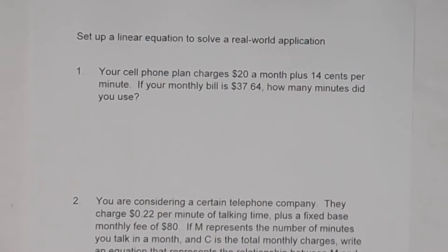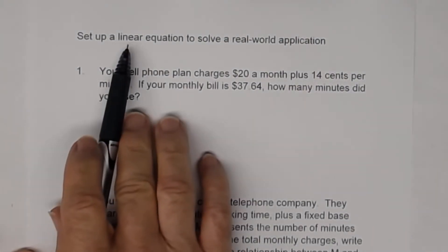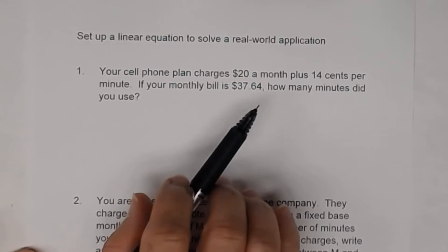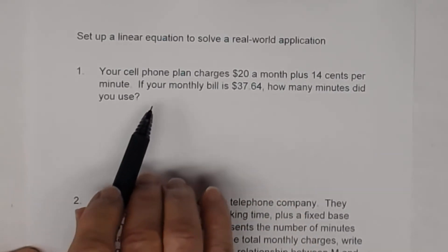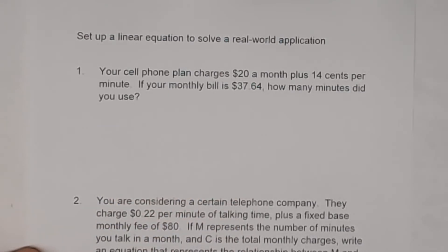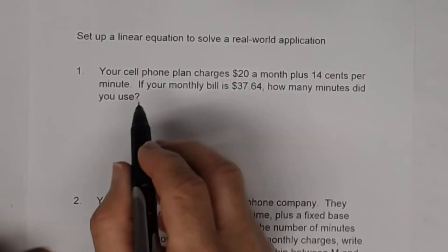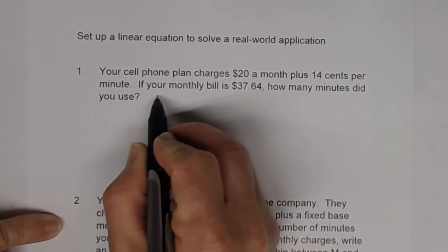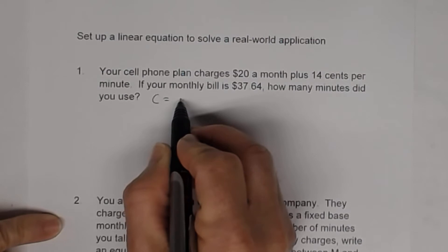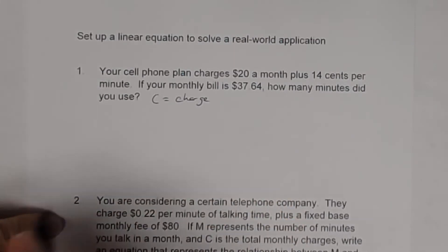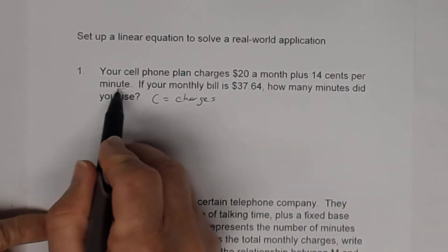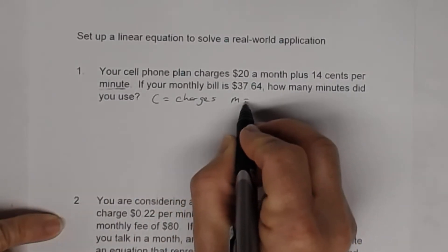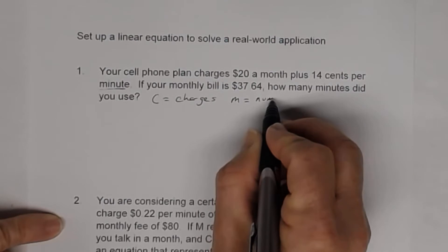To begin this, let's go ahead and set up a linear equation and then we're going to use this linear equation to determine how many minutes was used for this monthly bill of $37.64. So let's go ahead and let C equal the amount of the charges — how much it's going to cost us. And we're going to let M be the number of minutes.